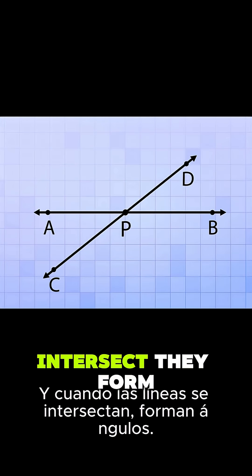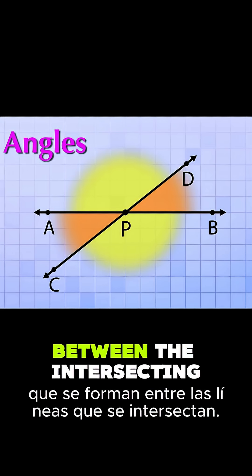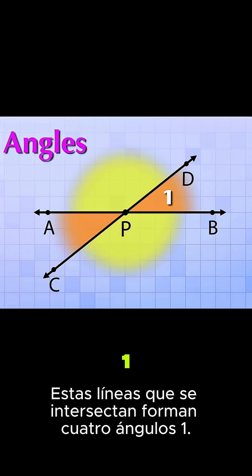And when lines intersect, they form angles. You can think of the angles as the spaces or shapes that are formed between the intersecting lines. These intersecting lines form four angles.